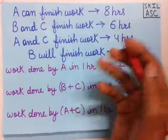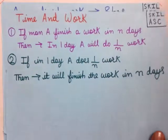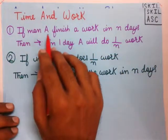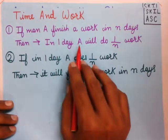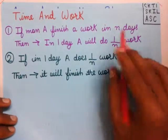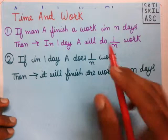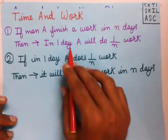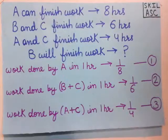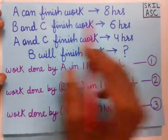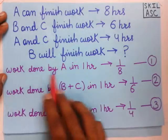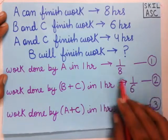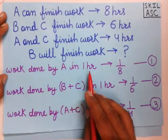To convert these statements, we take help of Rule Number 1 of time and work. Rule 1 says: if A finishes a work in N days, then work done by A in 1 day will be 1 by N — that is, we take the reciprocal. So if A can finish the work in 8 hours, then work done by A in 1 hour will be 1 by 8.